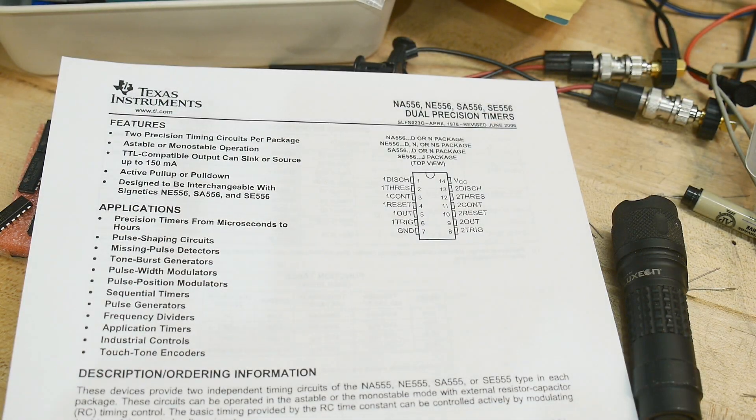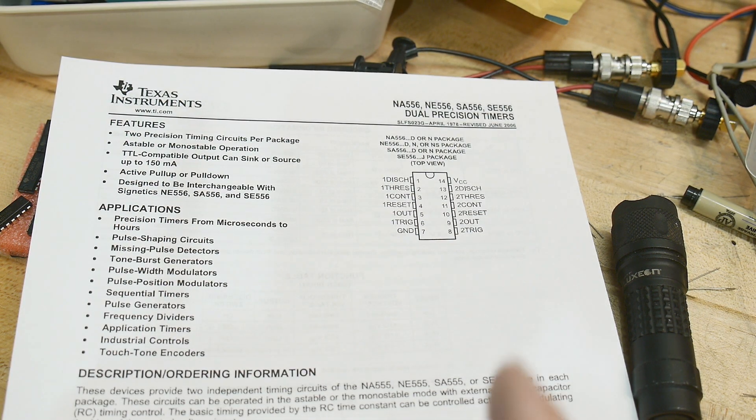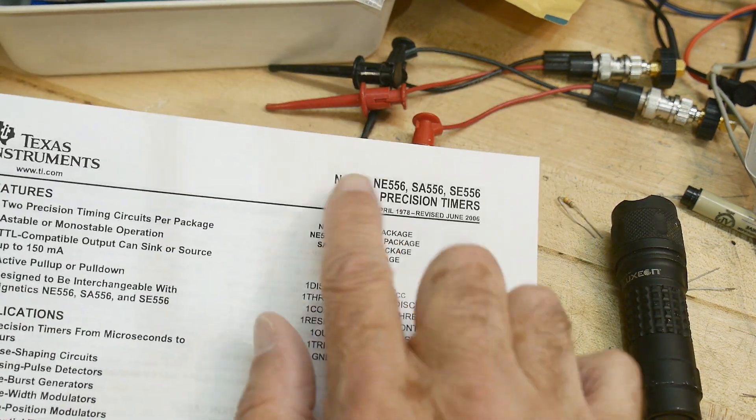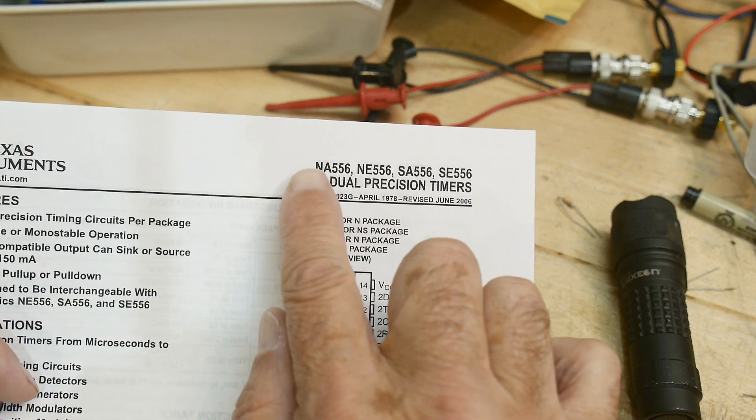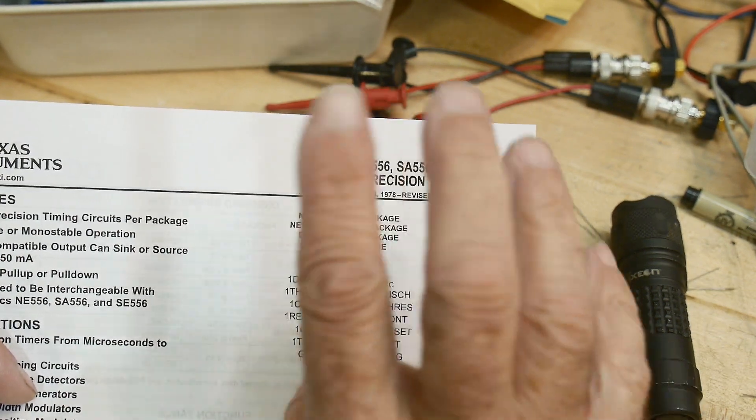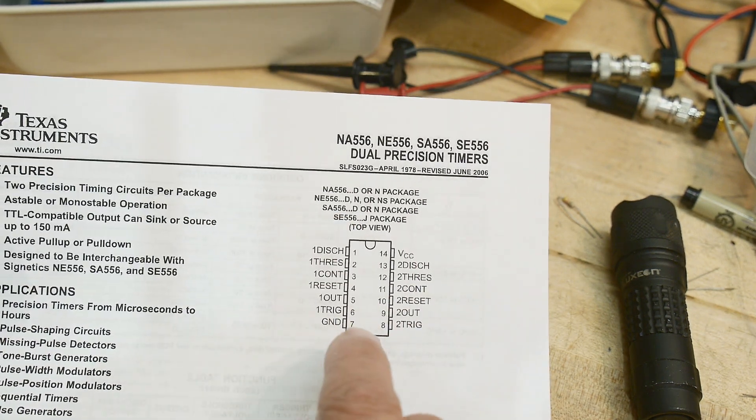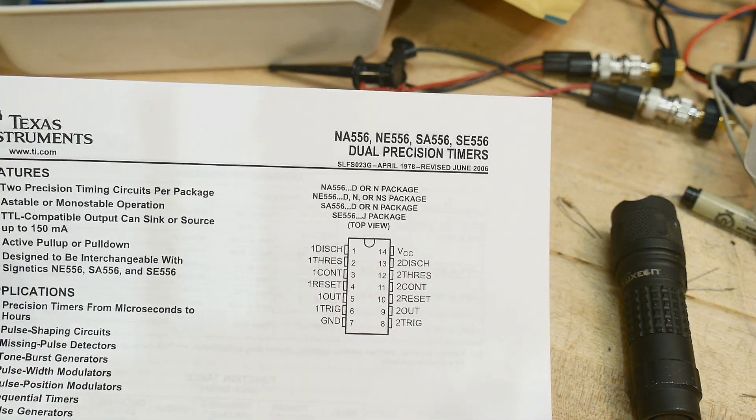All right, we've all had fun with the 555 timer. We're going to have twice as much fun today because we're going to be looking at the 556. So there was a 555 which was a single timer. The 556 is two 555s put all in one IC.